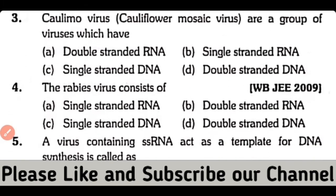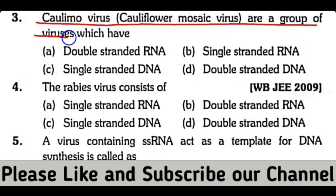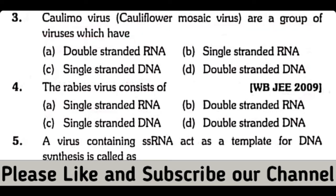Question number 3. The caulimovirus or cauliflower mosaic virus are a group of viruses which have double-stranded RNA, single-stranded RNA, single-stranded DNA, or double-stranded DNA. So the correct answer is option D. Cauliflower mosaic virus کے اندر double-stranded DNA present ہوتا ہے.